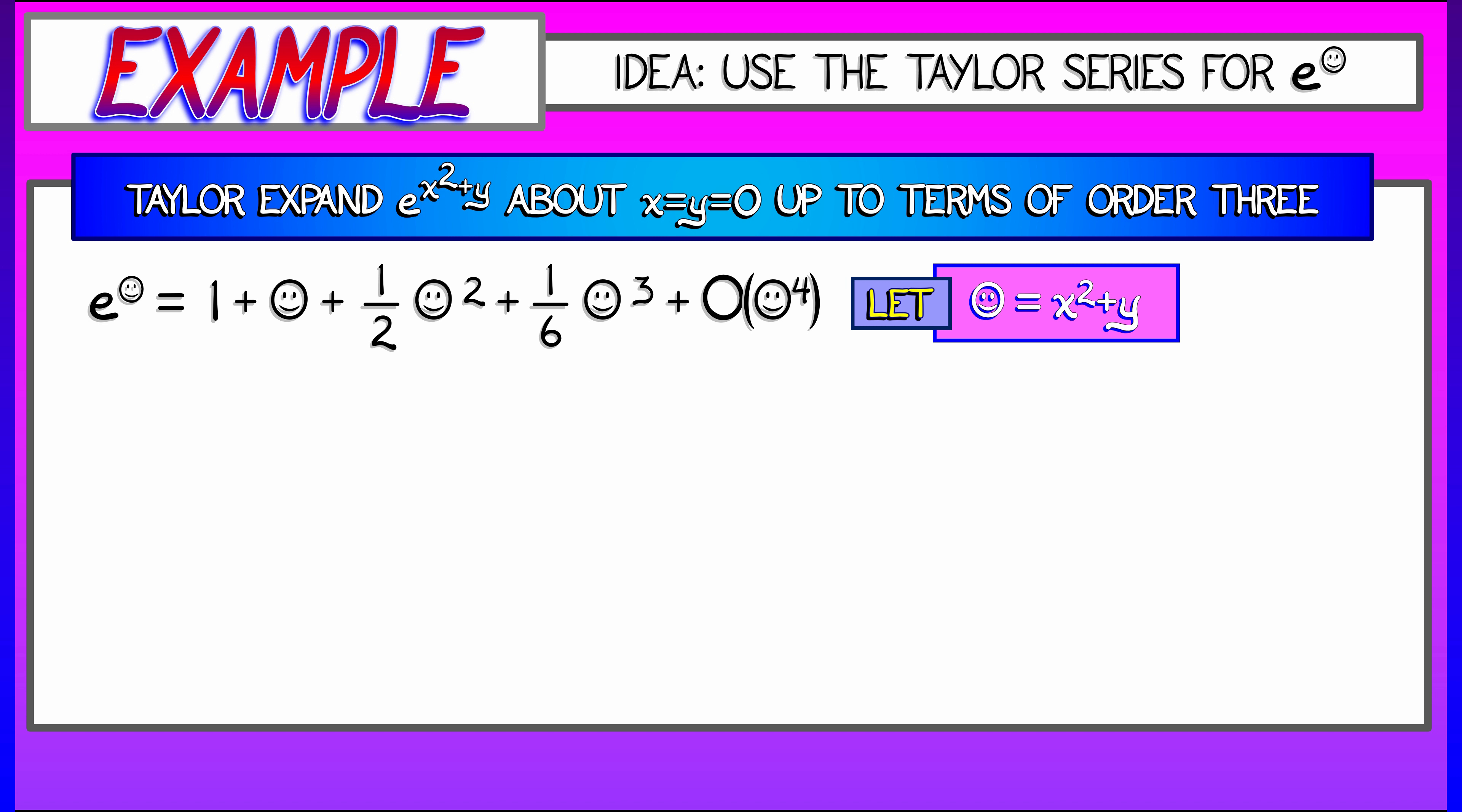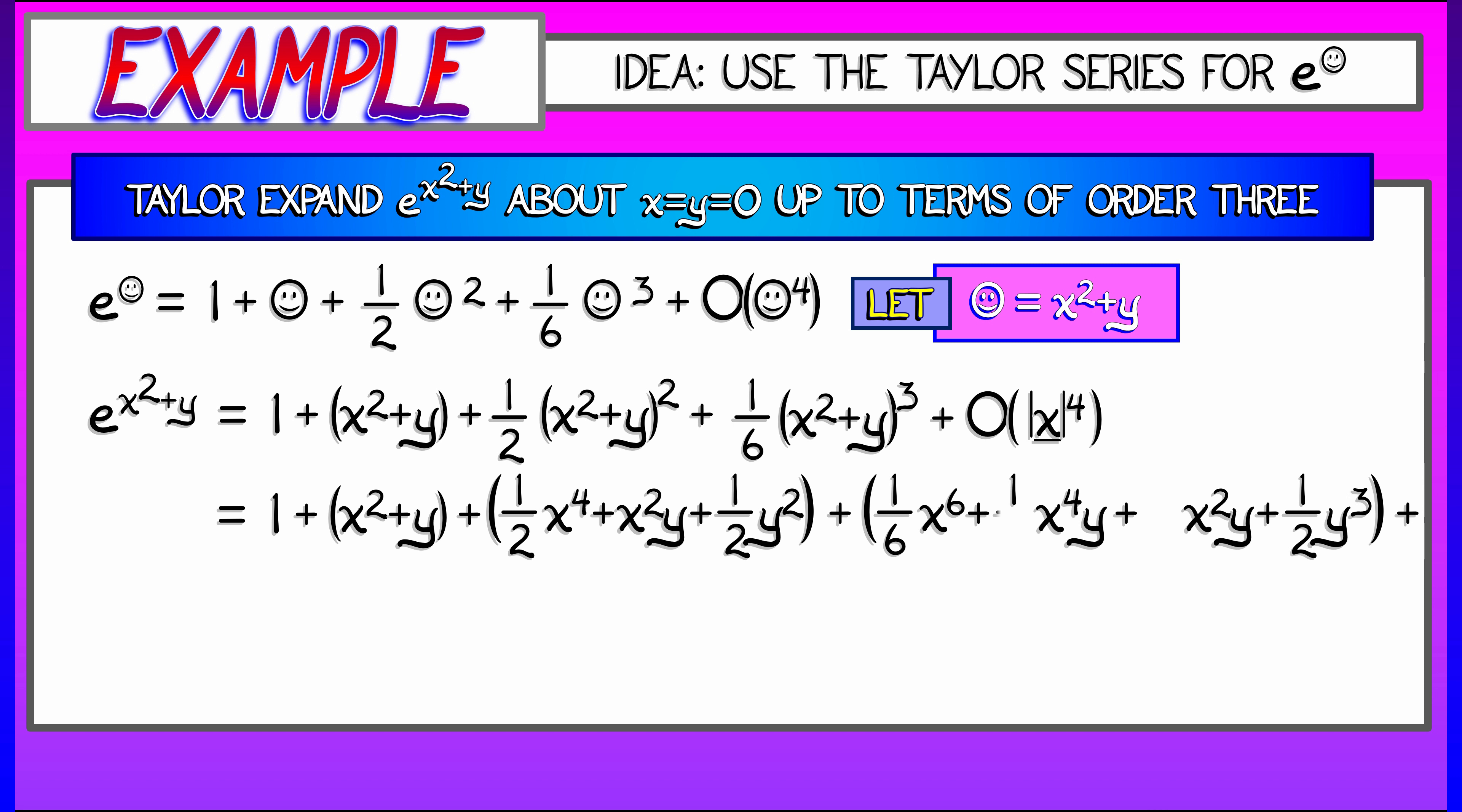Now look, just let smiley be equal to x squared plus y. That's a perfectly nice polynomial. Plug that in, just substitute x squared plus y in every time there's a smiley. You've got these terms. Pack everything else into a big O of degree 4 terms and higher.